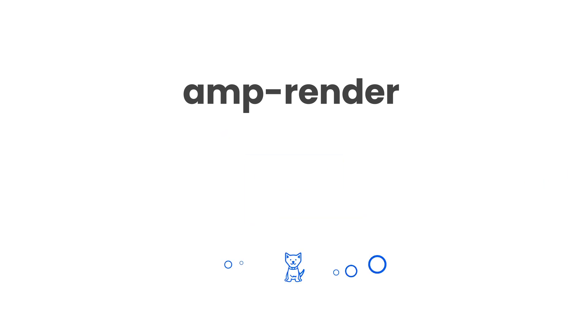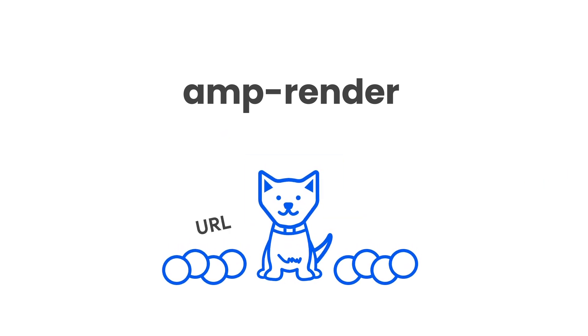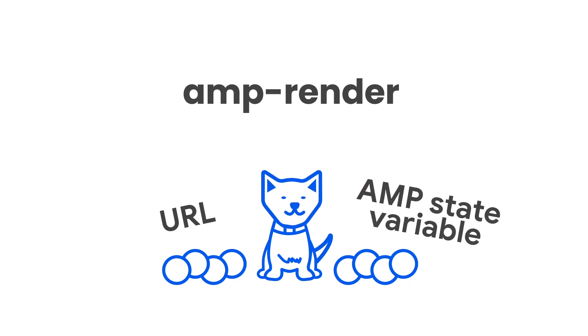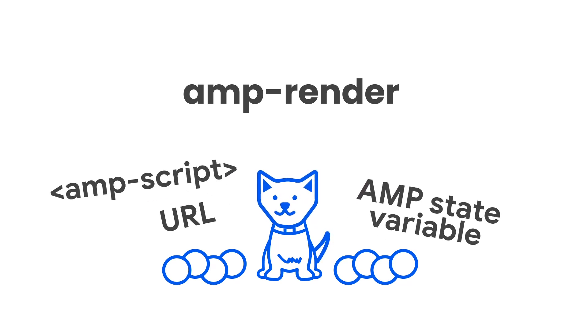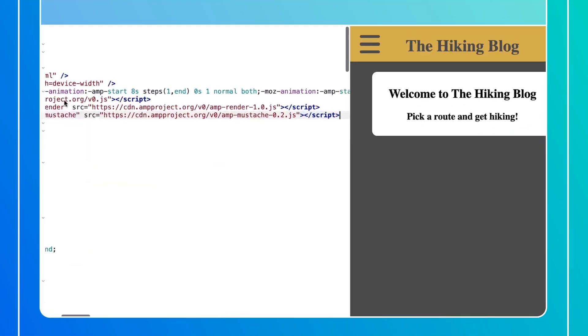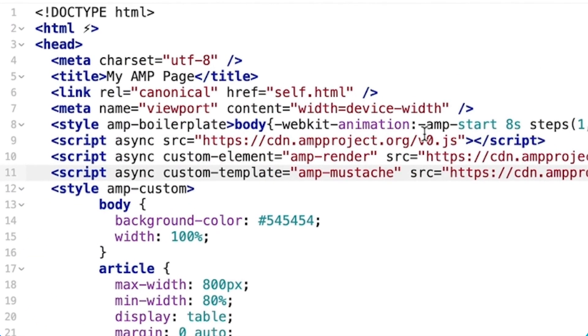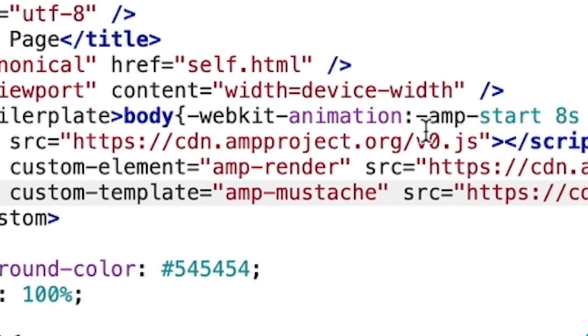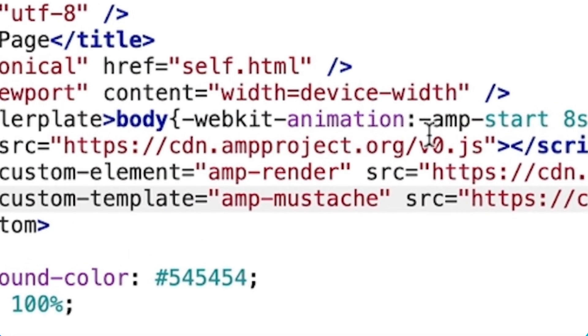AMP Render is adaptable. It can fetch data from either a URL, an AMP state variable, or your custom AMP script. Then it renders this data on the page using a mustache template. I'll start by importing the scripts for the components I'll need: AMP Render and AMP Mustache.